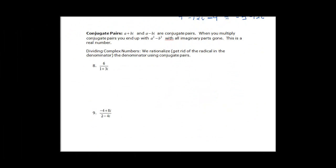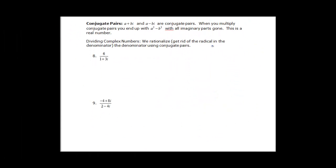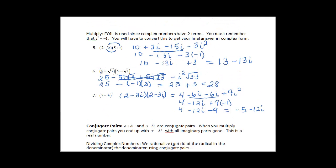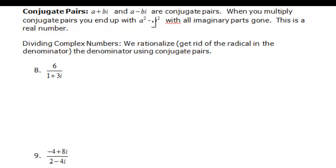Finally, we talk about division. When we talk about division, we have to talk about conjugate pairs. If you have a plus bi, its conjugate pair is a minus bi. When we multiply those two things — a plus bi and a minus bi — the middle terms cancel each other out, leaving us with a squared plus b squared, because i squared contributes a negative that makes the b² term positive.